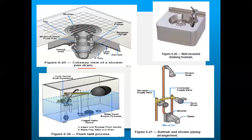This is a cutaway view of a shower pan and shower pan drain. The corner drain shows wastewater going into the pipe and out to the drain. The components include the upper flange, seepage flange, tiles, and moisture drain pan. These include traps, similar to those discussed in the last class. This is also a wall-mounted drinking fountain — the type you see in shopping malls, cinema theaters, and trains.